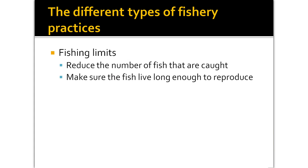The last thing we talked about was the types of fishery and how we keep track of fishing. A fishery is an area that has a large population of fish. There are several ways to control how many fish are in the ocean. The first is fishing limits, which reduce the number of fish caught and make sure fish live long enough to reproduce — that's why we have fishing seasons, fishing licenses, and size restrictions. It helps ensure we have fish available for sport fishing and for commercial harvest, protecting the area so there are plenty to come back to later.